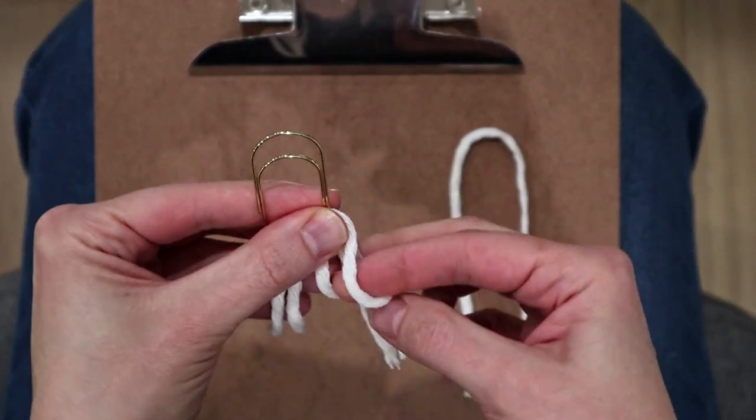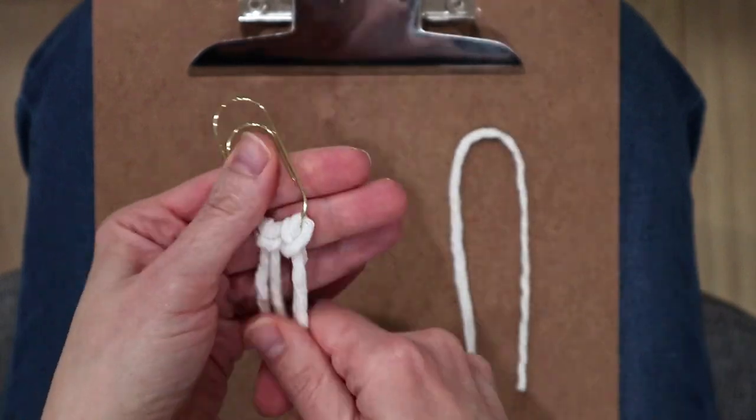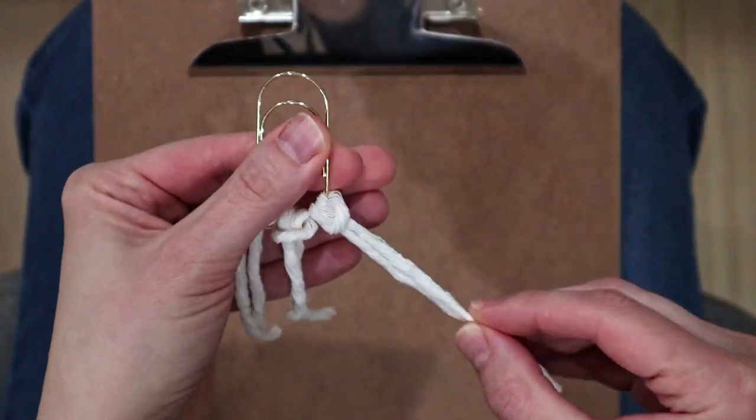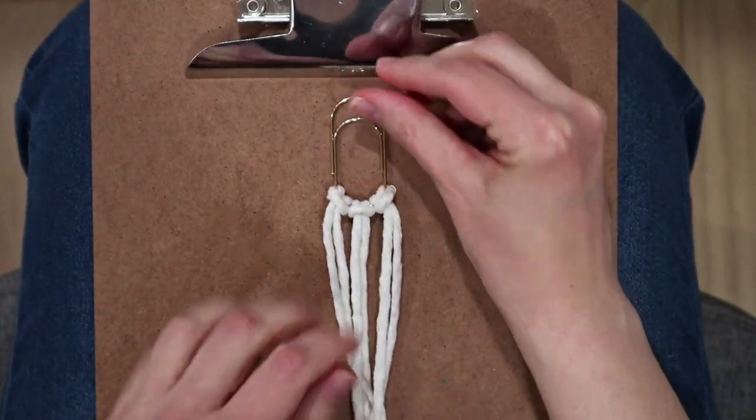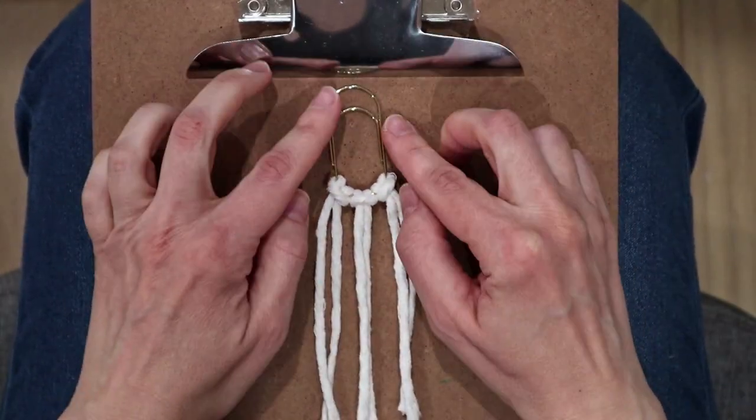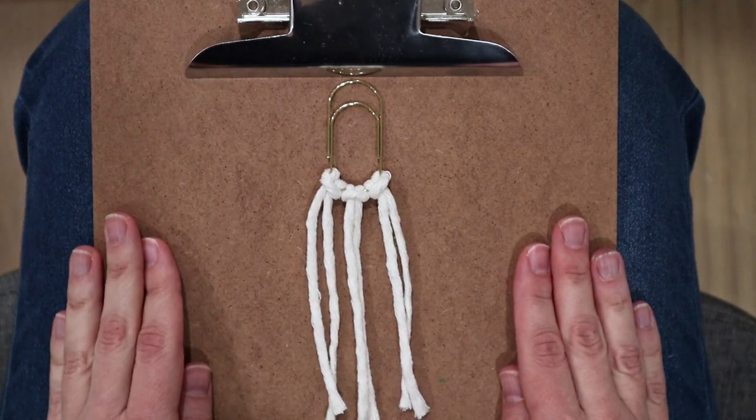Now simply attach the other two cords in the exact same manner, attaching them using a lark's head knot.